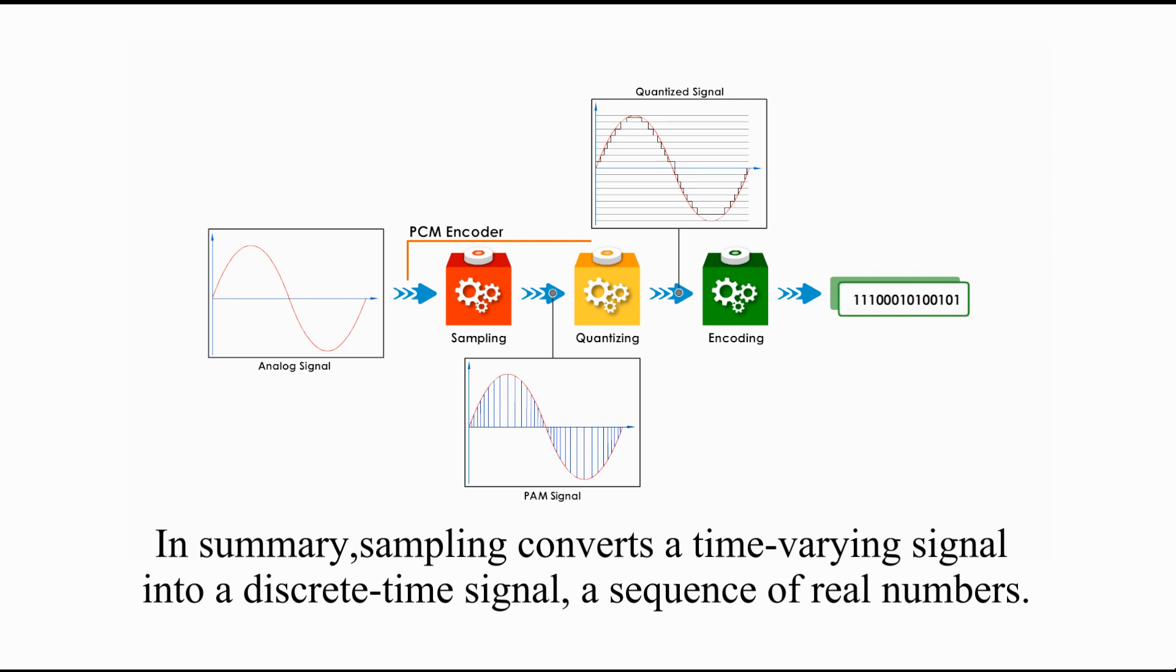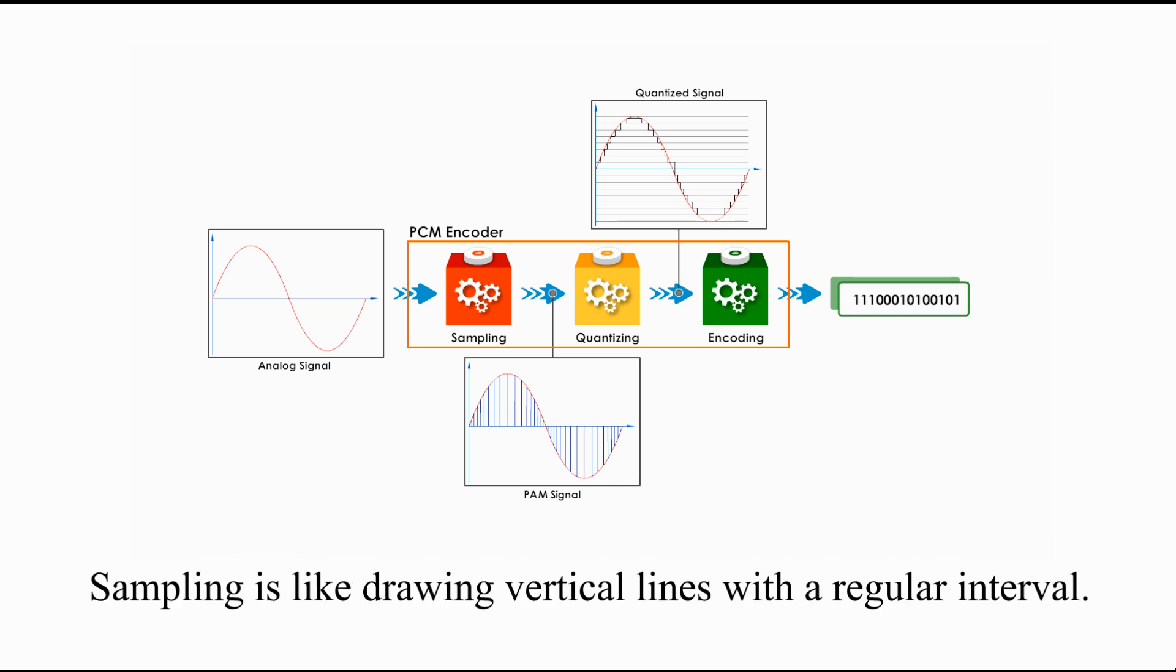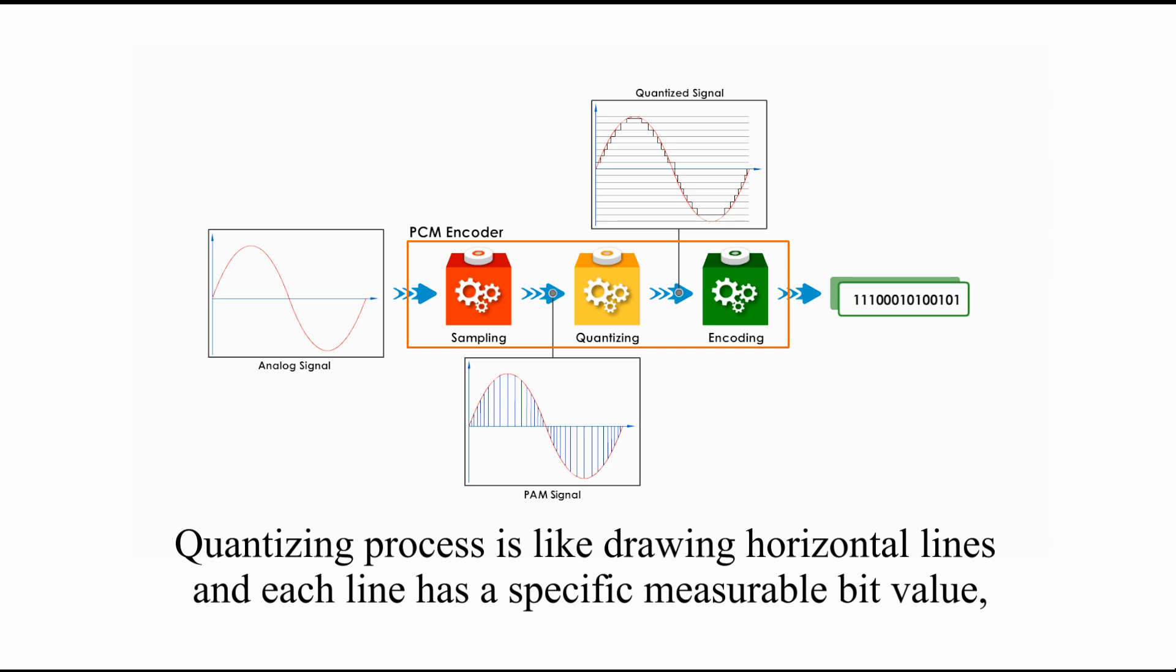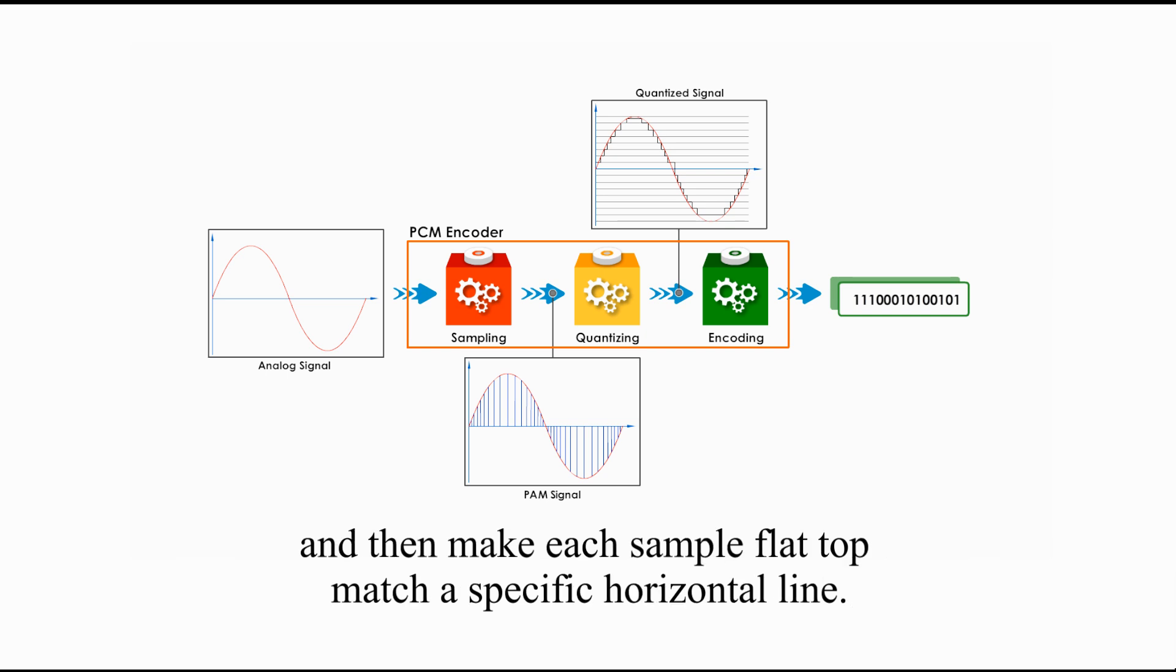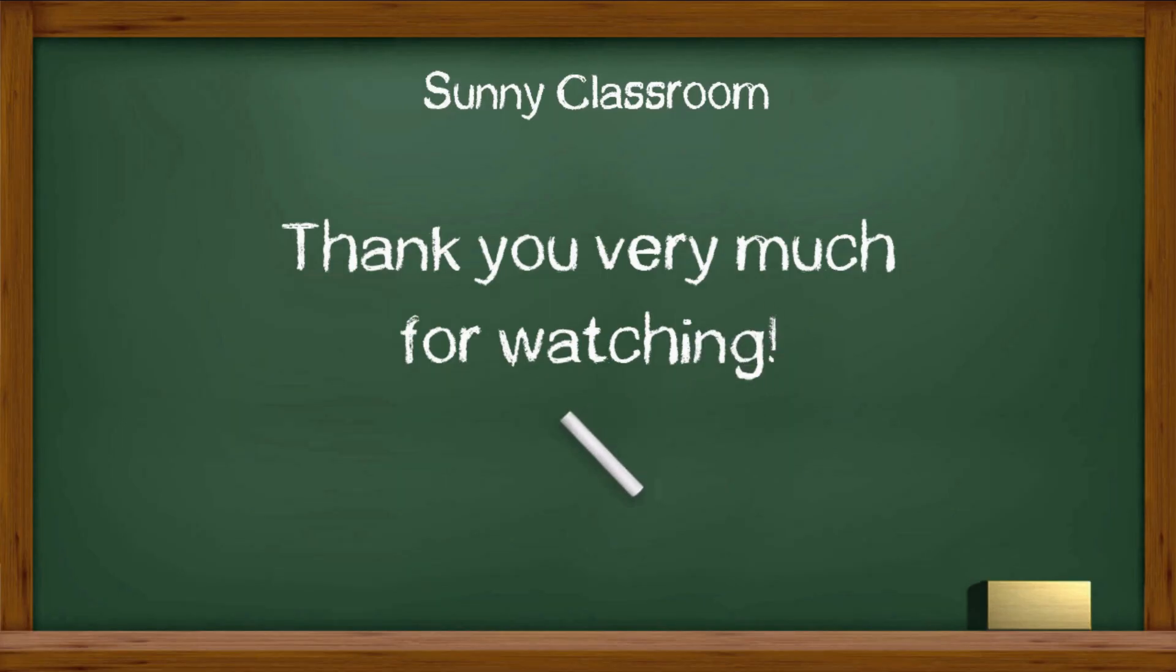In summary, sampling converts a time-varying signal into discrete time signal, a sequence of real numbers. Sampling is like drawing vertical lines with a regular interval. Quantizing process is like drawing horizontal lines, and each line has a specific measurable bit value, and they make each sample flat-top match the specific horizontal line. In this way, each sample can be uniformly encoded with specific bit values. I hope this video is helpful.